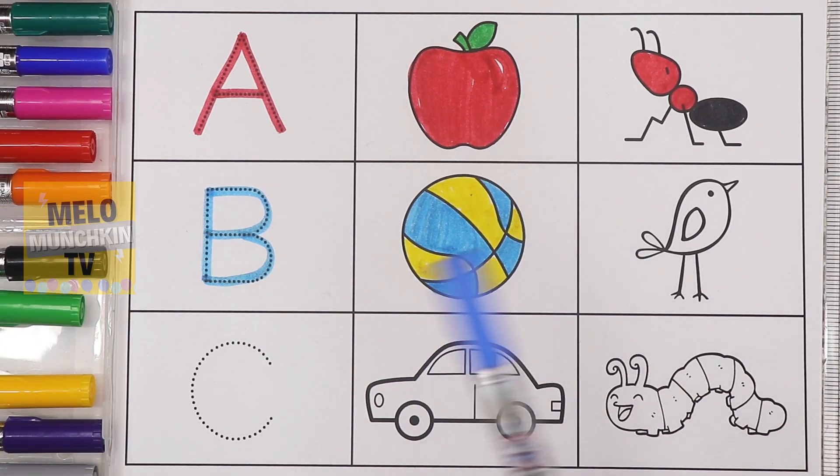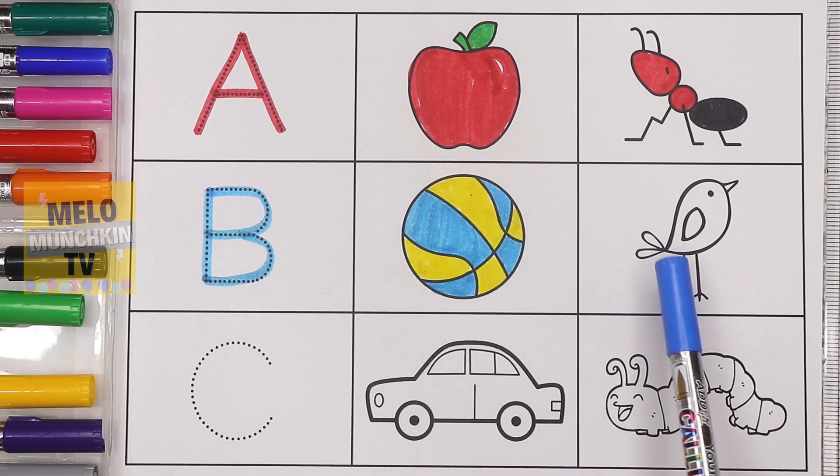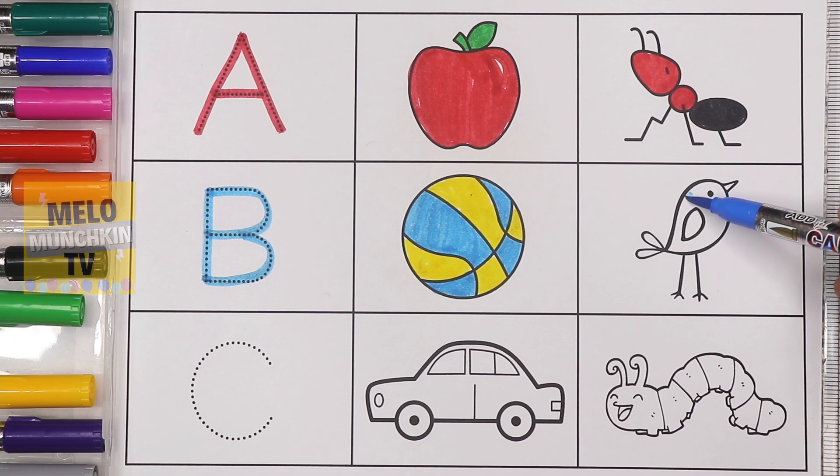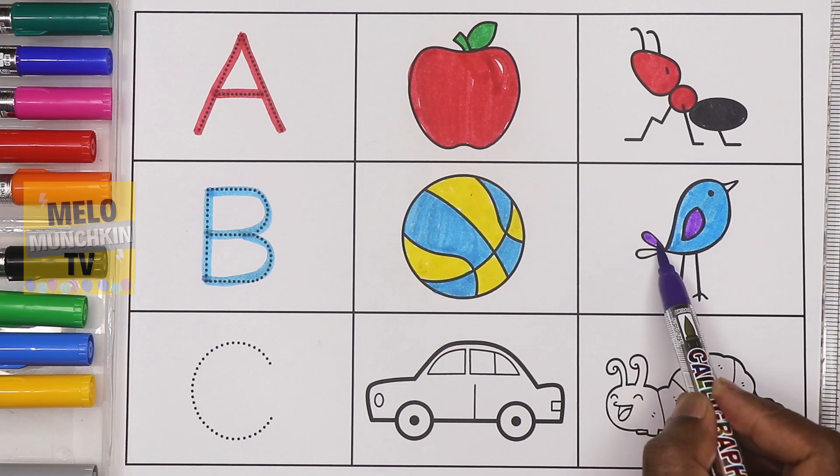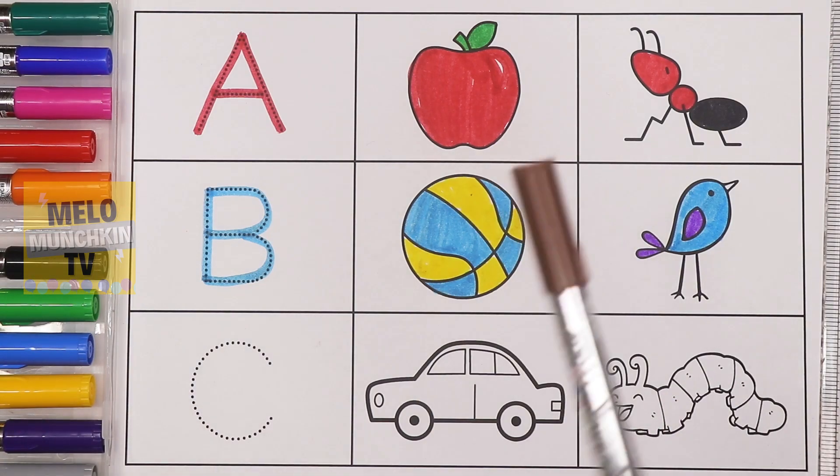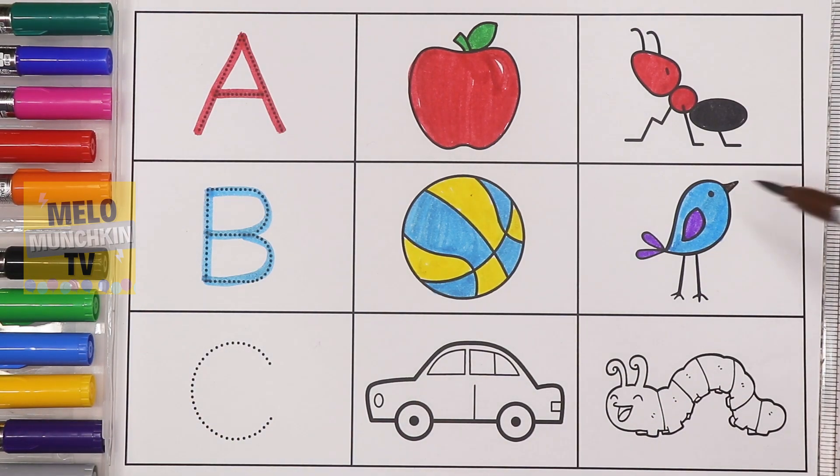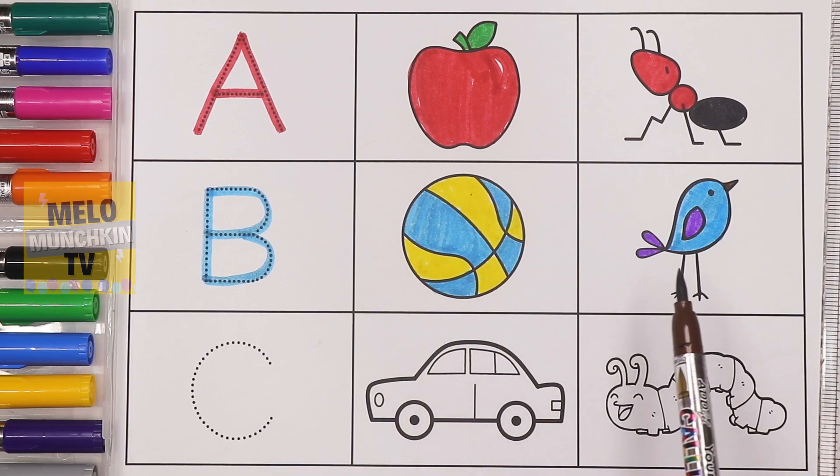Blue color. B for bird. B for bird. Purple color. Brown color. So B for bird. B for bird.